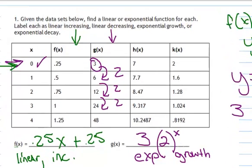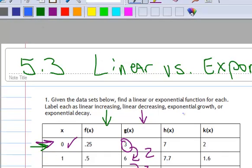Okay. Let's look at the next one. H of x. All right. So it's definitely increasing. And it looks like, let's see, I can go from 7 to 7.7 by adding 0.7. But if I add another 0.7, well, that doesn't give me 8.49. So it's not linear.